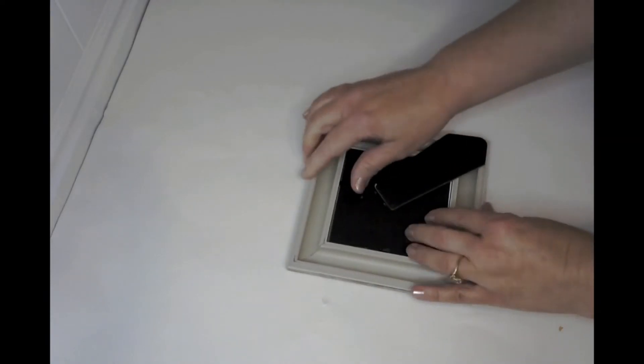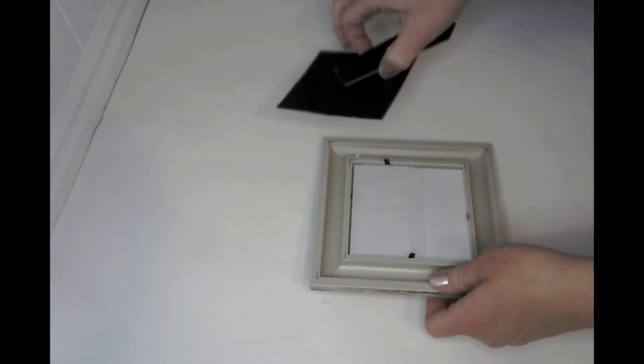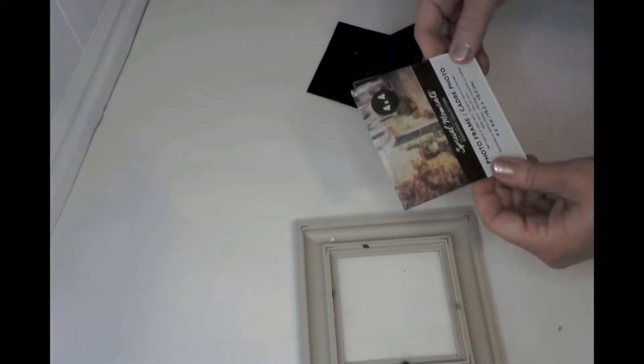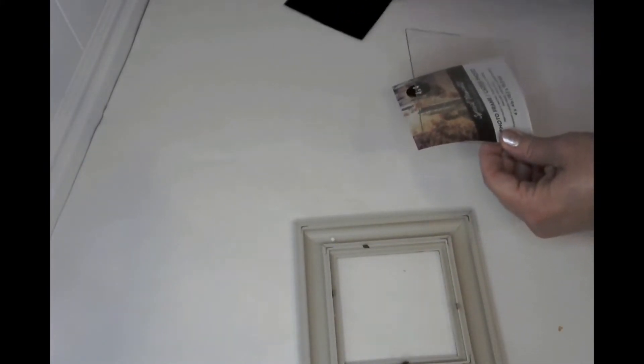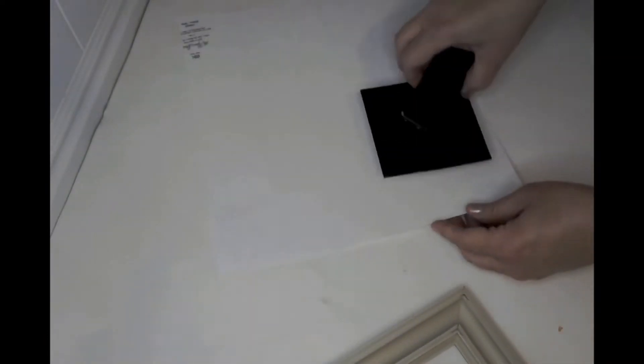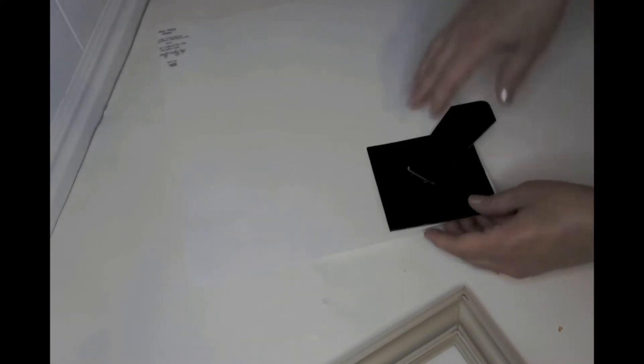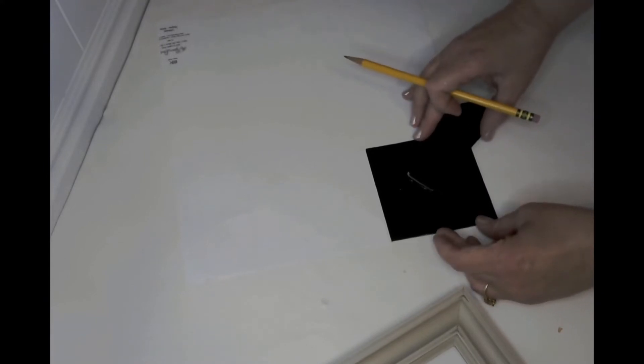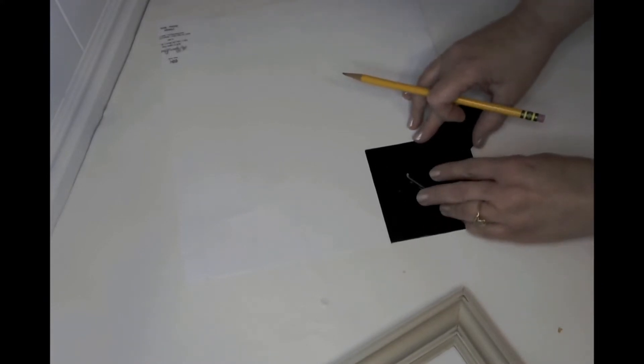So what we're going to do is we're going to take our picture frame and remove the backing. You can keep the glass or not, it really is up to you. But I'm going to take my scrapbooking paper here and I'm going to trace the paper to fit into the frame.